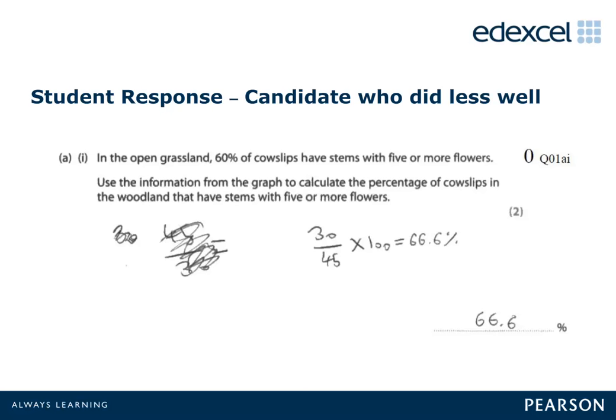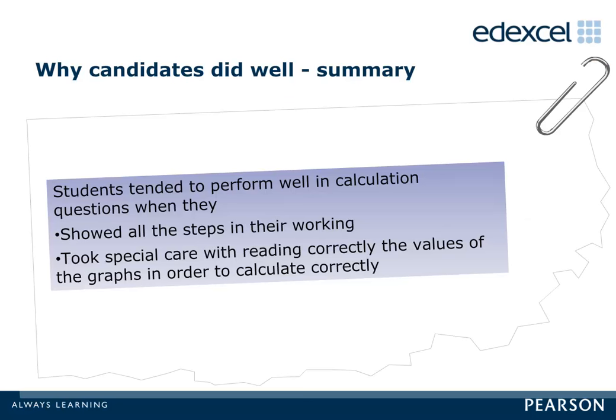This answer shows that the candidate has used incorrect readings from the graph and seems to have counted up totals rather than readings from the graph. The marks for calculation cannot be awarded here as the readings are not misinterpretations from the graph. Successful candidates were able to read accurately from the appropriate graph where there were two graphs to choose from, correctly calculate a percentage value, and include their working to maximise potential marks even if they incorrectly calculated the answer.